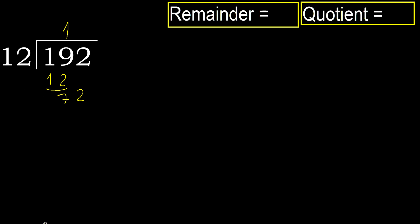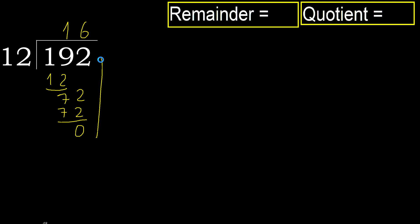72. 12 multiplied by 6 is 72, which is not greater. Subtract: 72 minus 72 equals 0. Next.